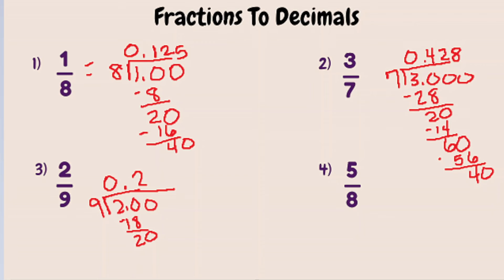Two. Bring down a zero. So nine goes into twenty two times again. And what you're going to notice is these decimals keep repeating.